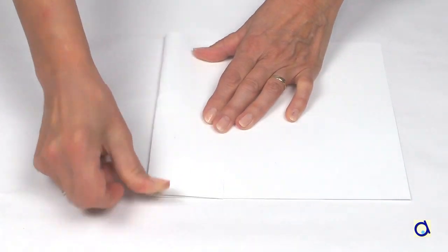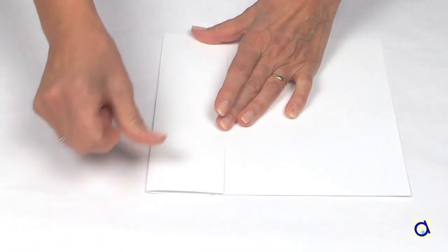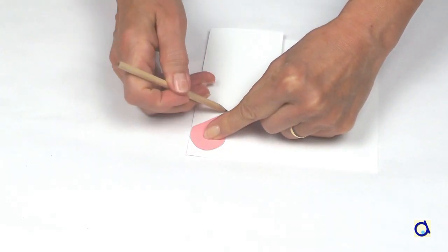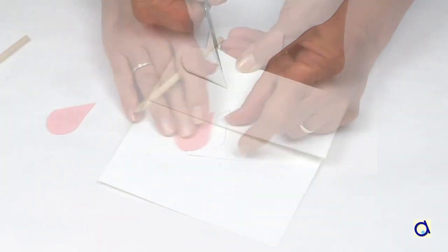Now, take a sheet of thick construction paper and fold it in half. Draw an angel wing near the fold so that when you cut the two layers of paper, you get two wings that are attached together.